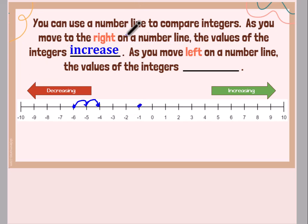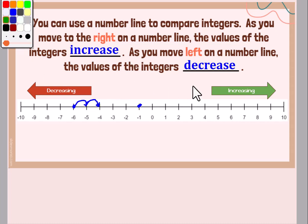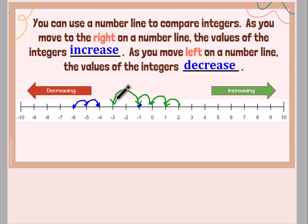Then if we do the opposite, instead of moving to the right, if we move to the left on a number line, then the values of our integers are decreasing. So if we start at two and we move to one, it's decreasing. We're going from two to one. We're getting smaller. When we go from one to zero, again, we're getting smaller. If you keep going to the left from zero to negative one, it's getting smaller. From negative one to negative three, it's still getting smaller. So as we move to the left, we get smaller. As we move to the right, our values increase. They get larger.